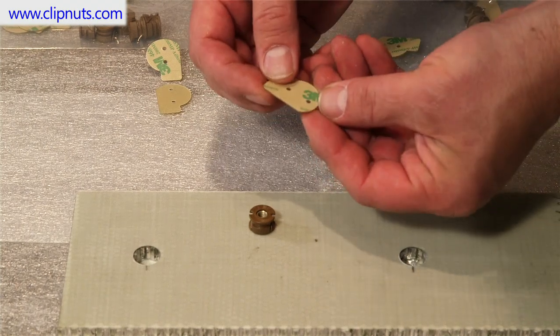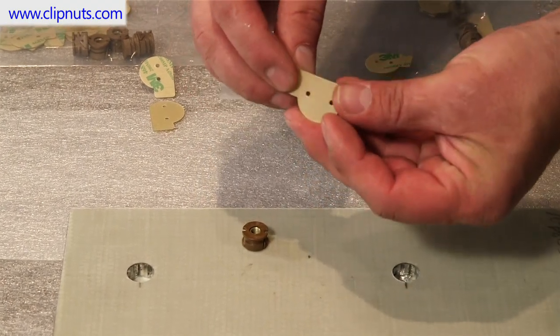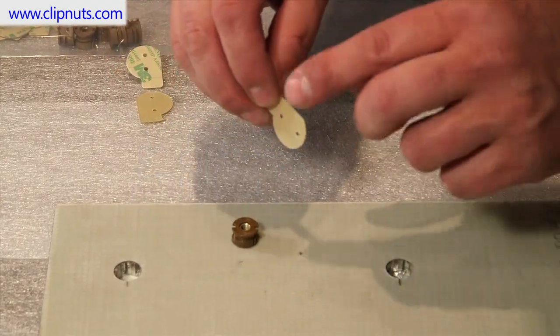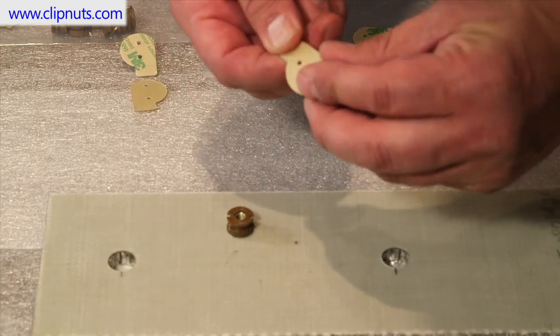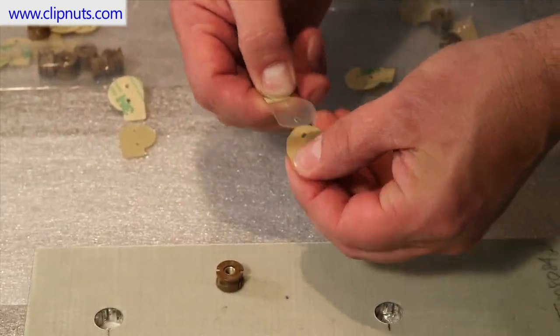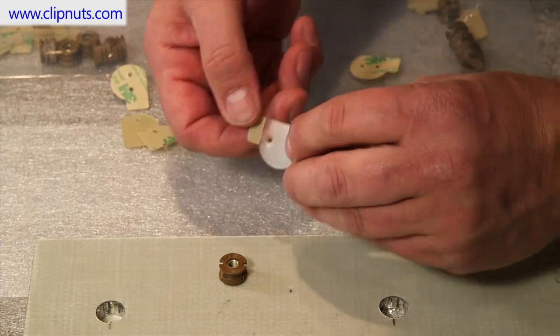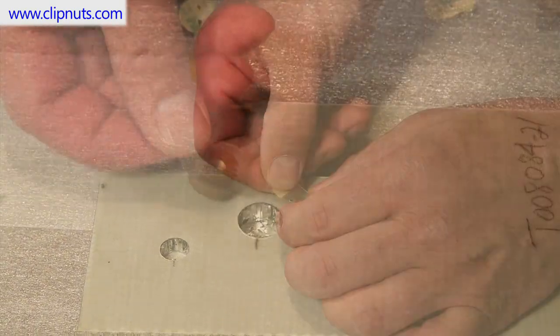Installation methods for the blind threaded inserts are similar to the through-type inserts. Drill a hole into the honeycomb panel. Prepare your epoxy and glue gun. Peel the paper backing off the adhesive installation tab. Align the holes and attach to the insert.